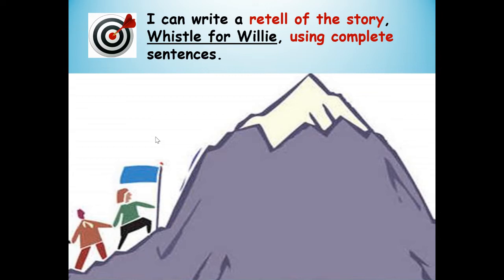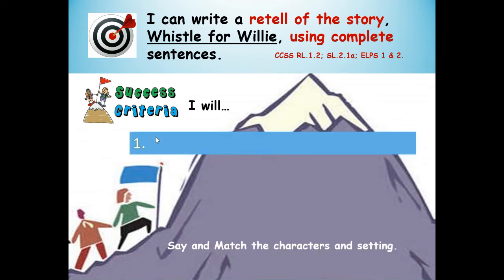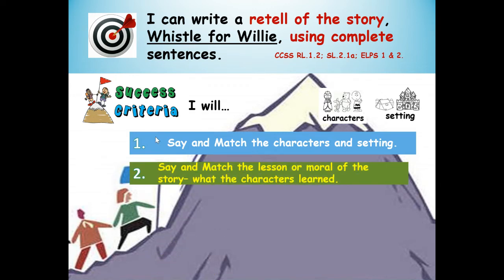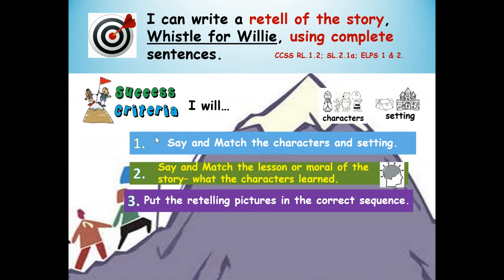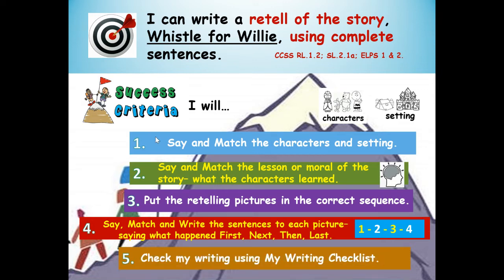I can write a retell of the story Whistle for Willie using complete sentences. Success criteria — here are your steps to success. Number one: say and match the characters and setting. Number two: say and match the lesson or moral of the story, what the character or characters learned. Number three: put the retelling pictures in the correct sequence. Number four: say, match, and write the sentences to each picture, saying what happened first, next, then, and last. Number five: check my writing using my writing checklist.